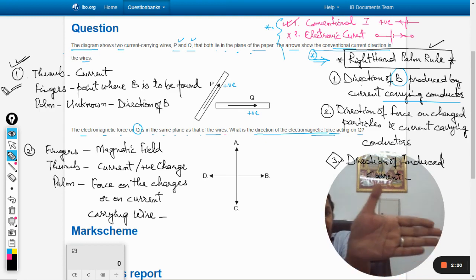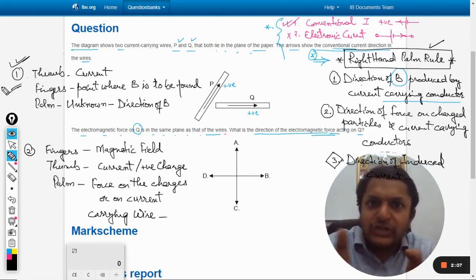I am keeping my hand like this. So my thumb is towards the current in P and my fingers are towards the location of Q.